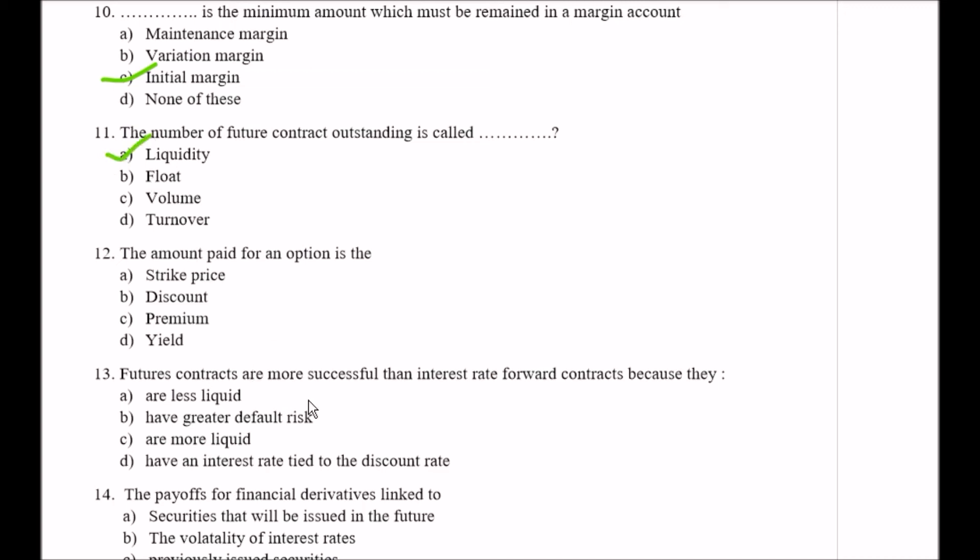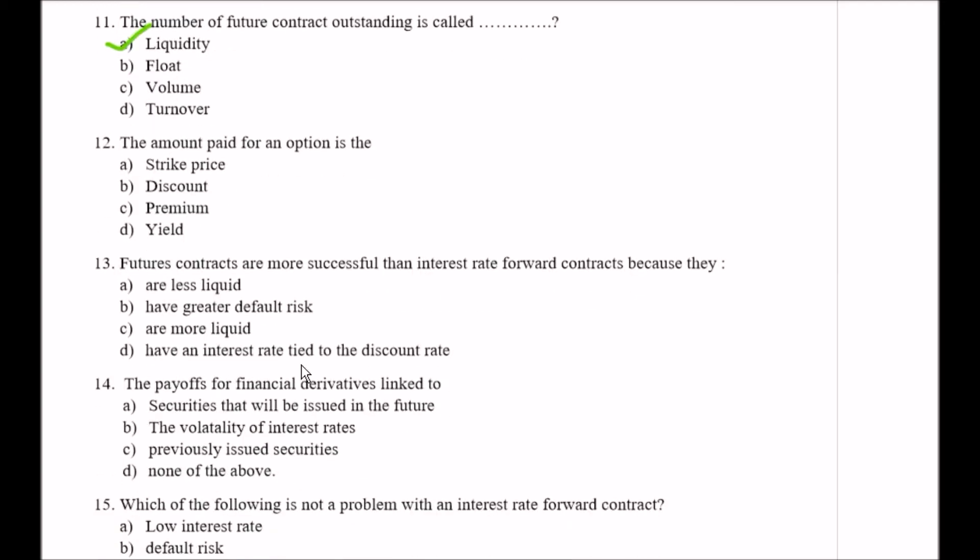Question number twelve: The amount paid for an option is the Option A strike price, Option B discount, Option C premium, Option D yield. So here your right option is Option C, that is premium.